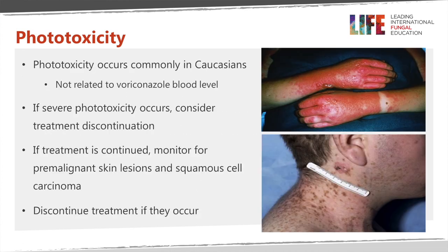The phototoxicity is not completely understood and is not related to blood levels — it occurs in some patients and not others, and varies in severity. In immunocompromised patients, such as transplant recipients, this also increases the risk of skin cancer. Skin cancer over many months or years of voriconazole therapy with photosensitivity is rare in normal people, but in transplant patients it's relatively common and can occur as early as nine months after developing photosensitivity. If patients have photosensitivity it's important to think about switching drugs, as some of these skin cancers can be quite severe.